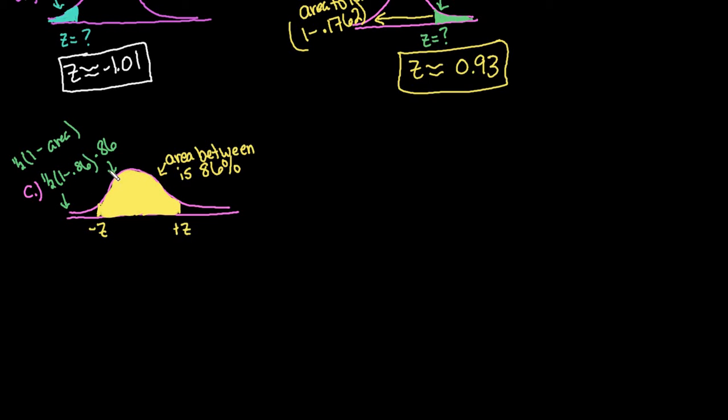You can plug it in like that. Or if you wanted to, you could do the math. So if you wanted to, you could go ahead and simplify this. And 1 minus 0.86 would give us 0.14. And then half of that would be 0.07.